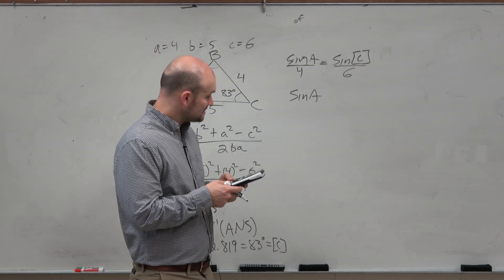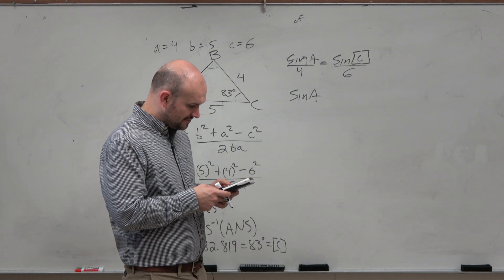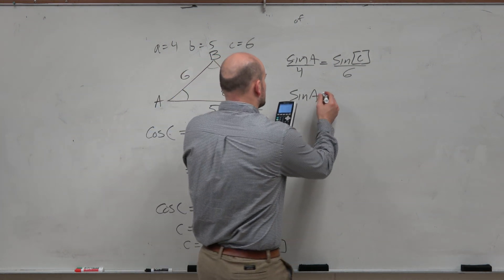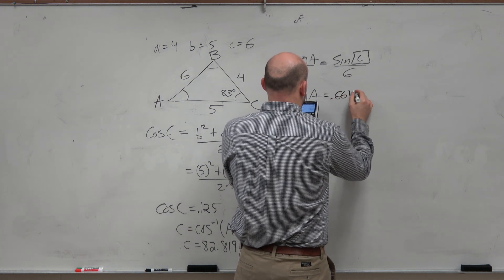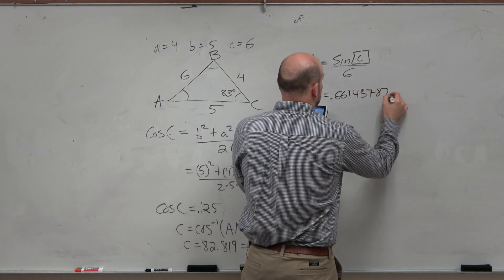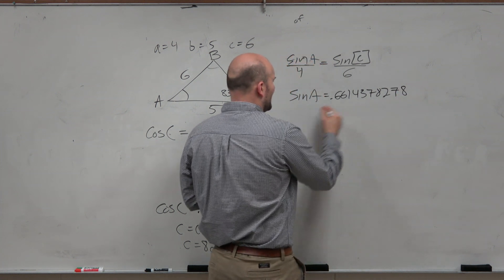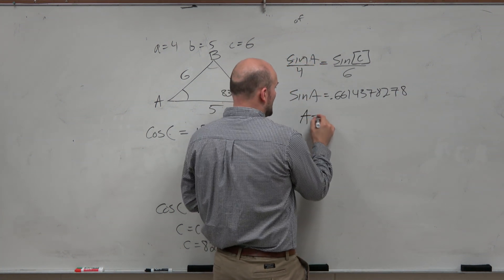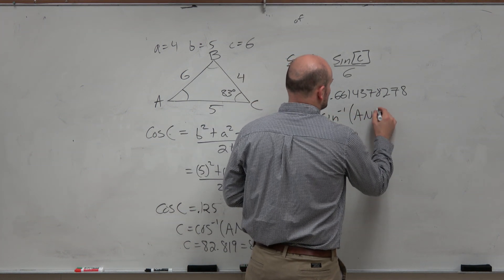And then I'll do 4 times the sine of C divided by 6. And I get sine of A equals 0.6614378278. I don't want to type that in. But that's the sine of A.